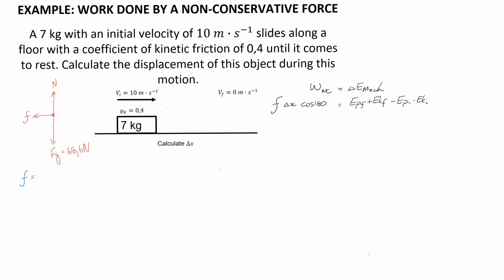That then allows us to calculate the friction force that's acting on this object, that being the coefficient of friction multiplied by the normal force. Coefficient given as 0.4, the normal force equal but opposite to gravity in this case 68.6.